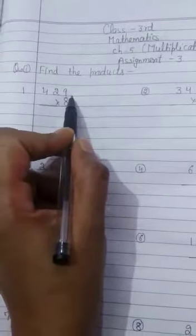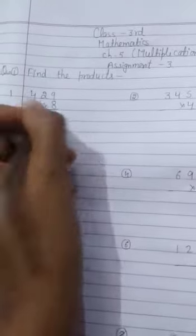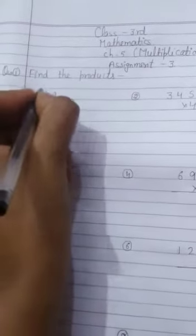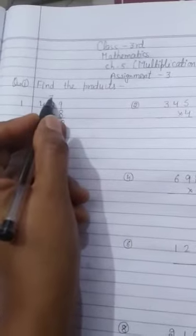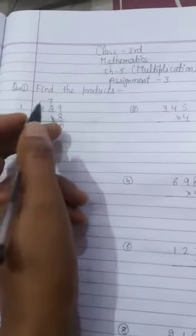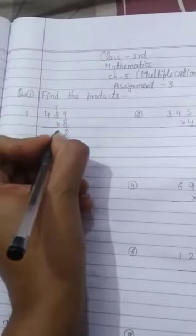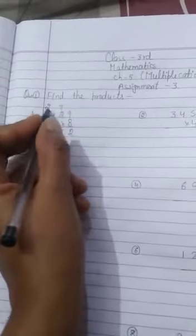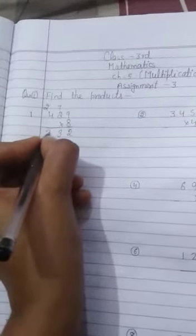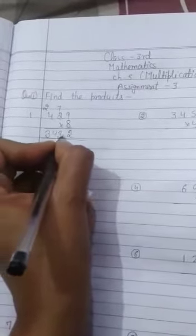429 multiplied by 8. Let's start. 8 times 9 is 72. We will write 2 here and 7 here. 8 times 2 is 16, 16 plus 7 is 23. Write 3 here and 2 here. 8 times 4 is 32, 32 plus 2 is 34. Now answer is 3432.